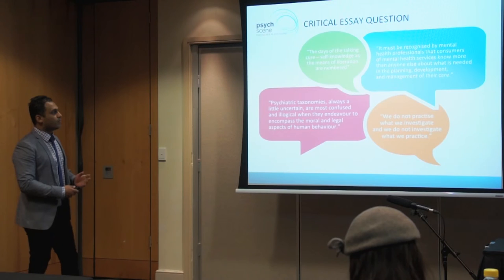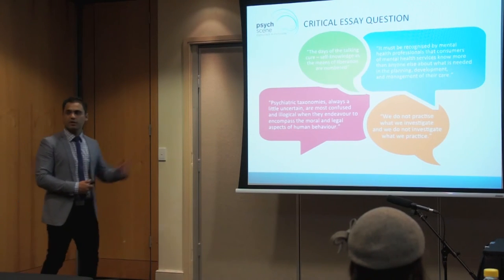My tip for the critical essay: start watching Q&A — it's one of the best ways to think about themes for the essay, as it covers such broad topics. You can always ask how something is relevant to mental health. You can also bring in quotes — you don't need to know them verbatim, but there's a way of putting forward what a person might have said, for example using 'according to X.' For instance: 'We do not practice what we investigate and we do not investigate what we practice.'